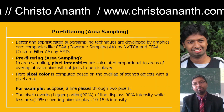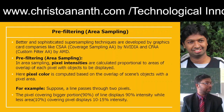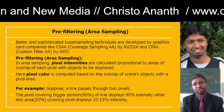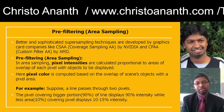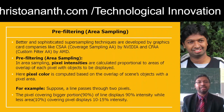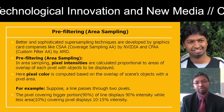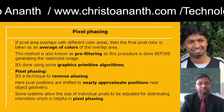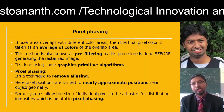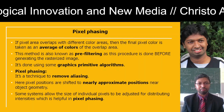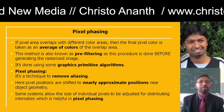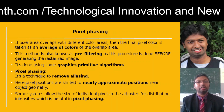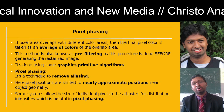Pre-filtering uses area sampling where pixel intensity is calculated proportional to the area overlapping each pixel with the objects in the scene. The pixel color is computed based on the overlap of screen scene objects. For example, if a line passes through two pixels, the pixel covering 90% of the overlap has more intensity than the pixel covering only 10-15%. This pre-filtering technique is done before generating the rasterized image and can use graphics primitive algorithms.